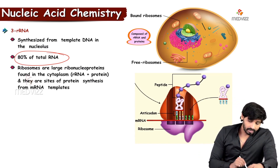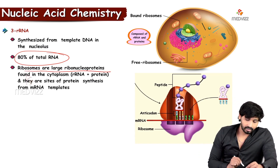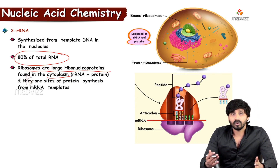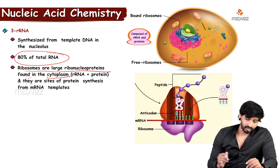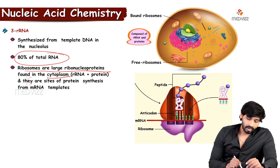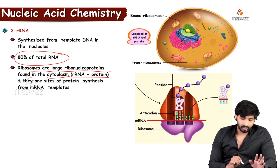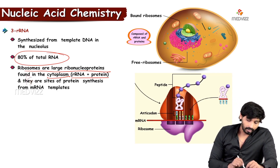These are the large ribonucleoproteins found in the cytoplasm. Ribosomes are present in the cytoplasm; they provide the site for protein synthesis. They are a combination of rRNA and proteins, and they are the site of protein synthesis.